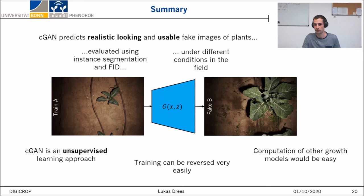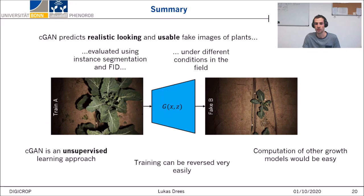Let's come to a brief summary. We found that our conditional GAN is able to predict not only realistic-looking images but also meaningful fake images of plants, which we evaluated with instance segmentation and FID score under different field conditions. It should be emphasized that the generation is unsupervised and only requires images that show the same scene at different times. Therefore it would be easy to compute other growth models, for example a one or two week growth, or to perform the generation in the other direction, which could be used to fill gaps in time series data.